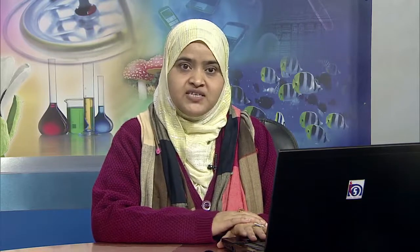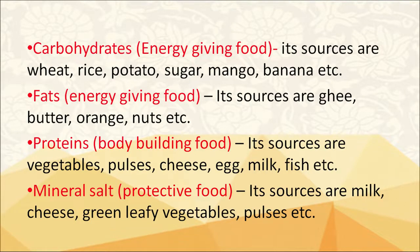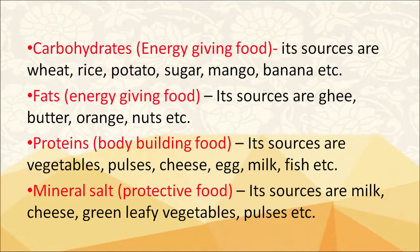Nutrients provide energy to the body to work and play. We can classify nutrients as carbohydrates, fats, proteins and mineral salts. Carbohydrates are energy-giving food and their sources are wheat, rice, potato, sugar, mango, banana, etc. Sources of fats are ghee, butter, nuts, etc. Sources of proteins are vegetables, pulses, cheese, eggs, milk, fish, etc. Minerals are also called protective food and their sources are milk, cheese, green leafy vegetables and pulses.